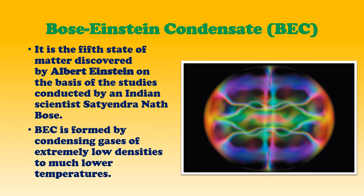The 5th state of matter is Bose-Einstein condensate. It is the 5th state of matter discovered by Albert Einstein on the basis of studies conducted by Indian scientist Satyendranath Bose. This is why the credit is shared — the studies used were by Satyendranath Bose, who did a lot of work in this area, and Albert Einstein finally discovered it. So both scientists' names were given to it: Bose-Einstein condensate.